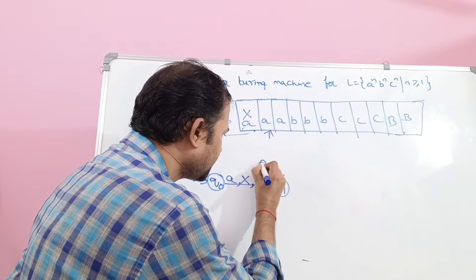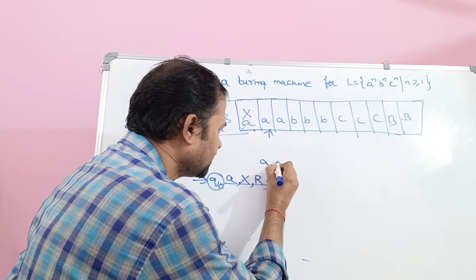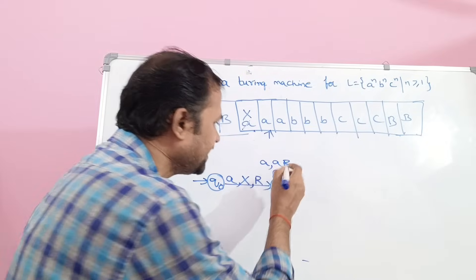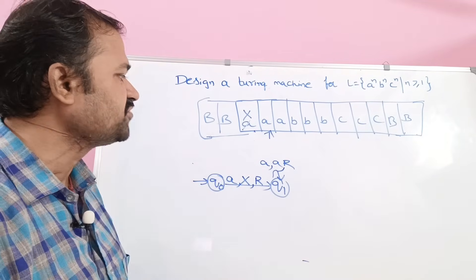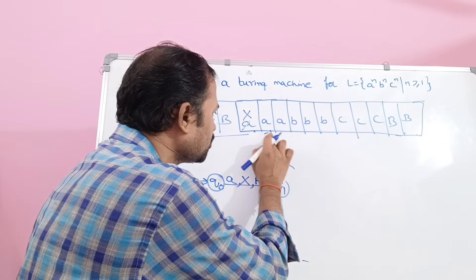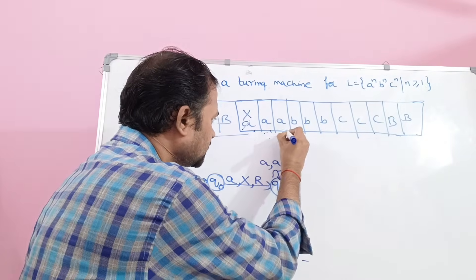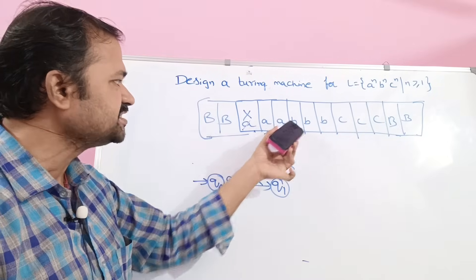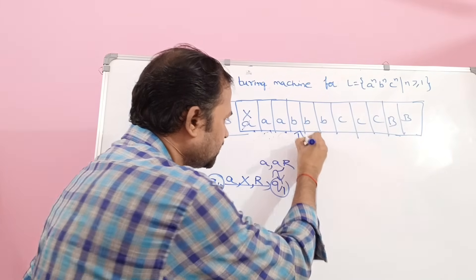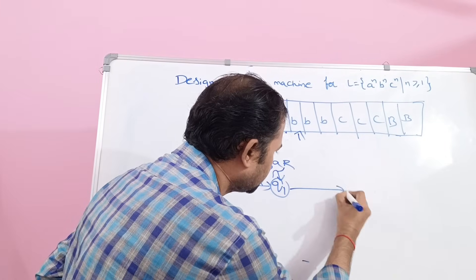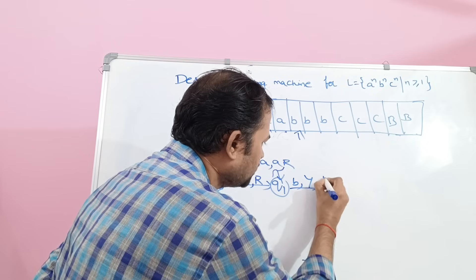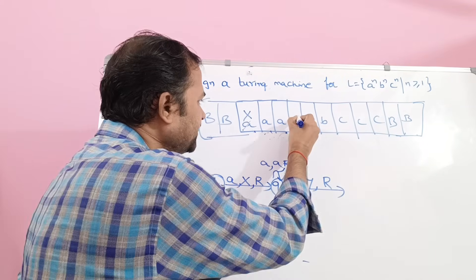If we apply A on Q1, don't change A — replace with A and move the read/write head towards the right. Continue moving right past remaining A's without changing them. Next, if we apply B on Q1, then modify the content to Y and move the read/write head towards the right.